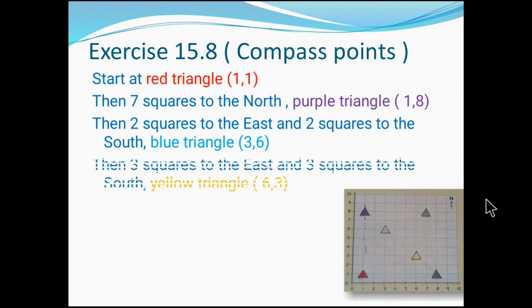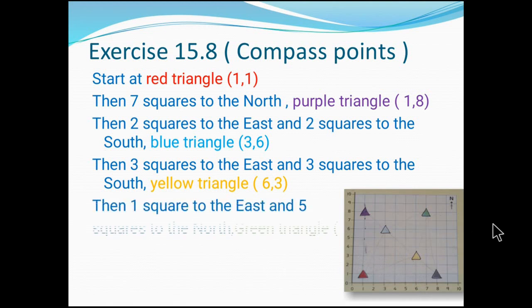From this blue you have to go to yellow one. To go to yellow: three boxes, three squares to the east, and three squares to the south, you can get the yellow one. And yellow coordinates: (6,3). And then one square to the east and five squares to the north, we can get the green one. And the coordinates: (7,8).